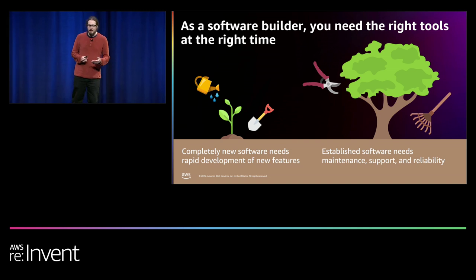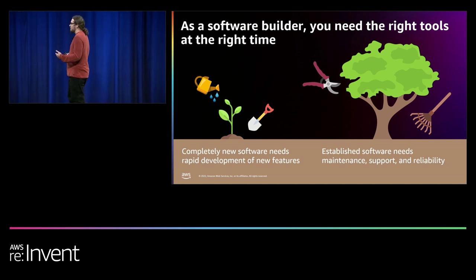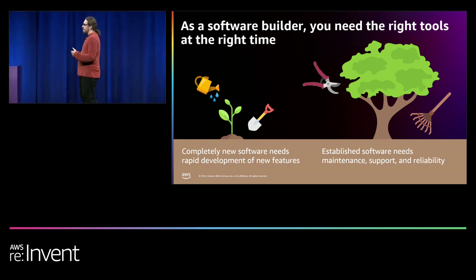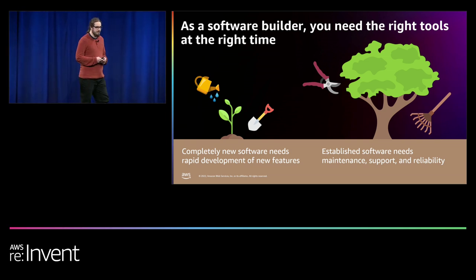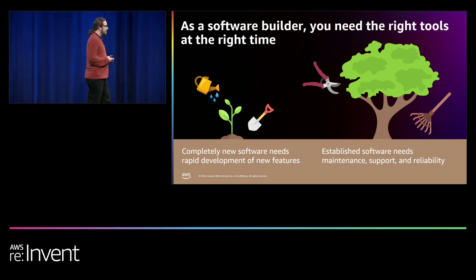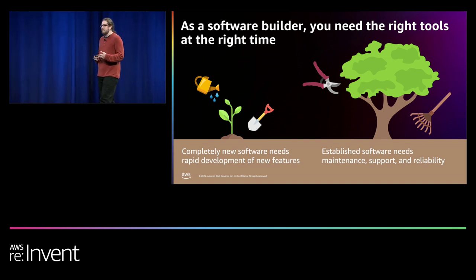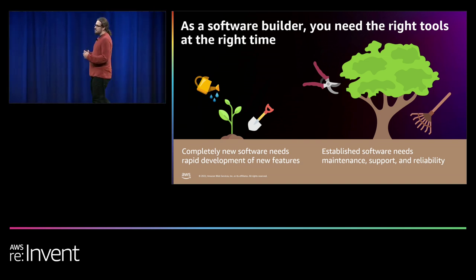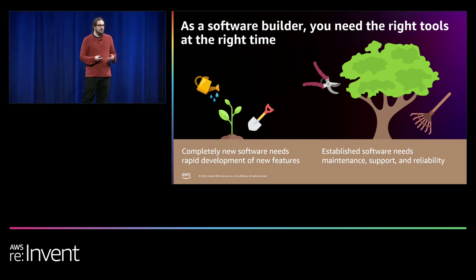Same thing goes for software. If I'm building something completely new, the main things I generally need are rapid product development — I need to build new features and figure out what fits with my intended market. But if I'm building on established software with a successful user base, maybe what I need more is support, maintenance, and reliability. Feature development slows down, but I have different needs as a software builder.